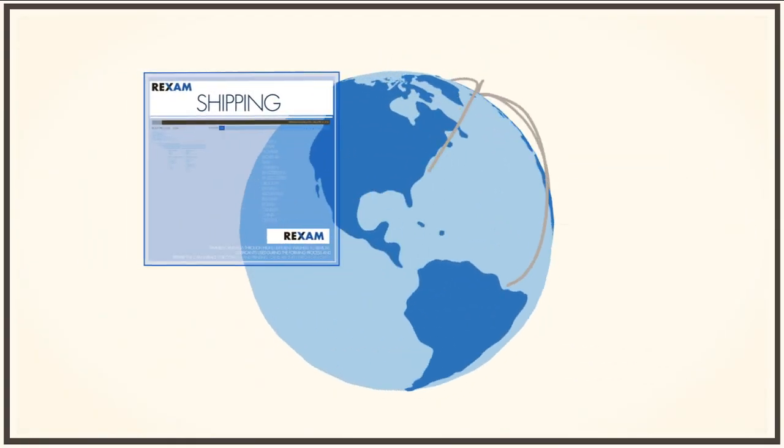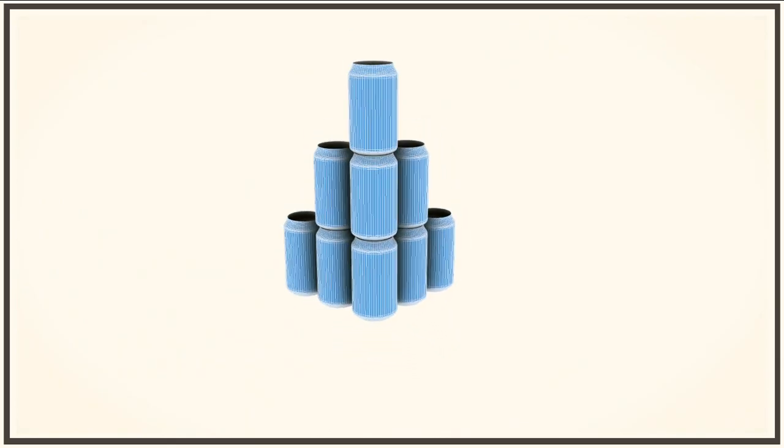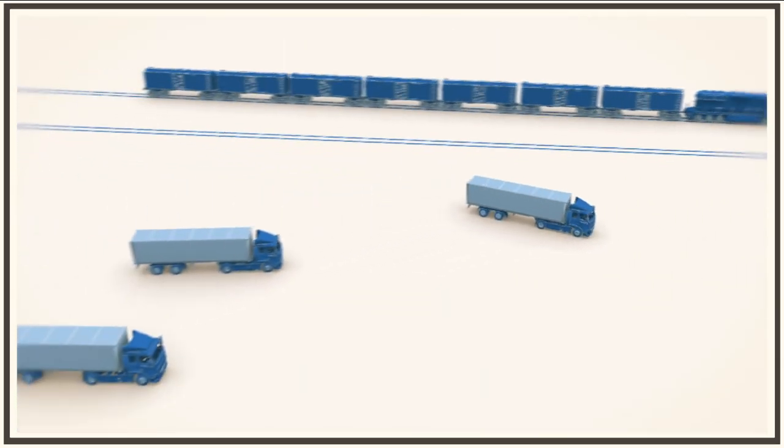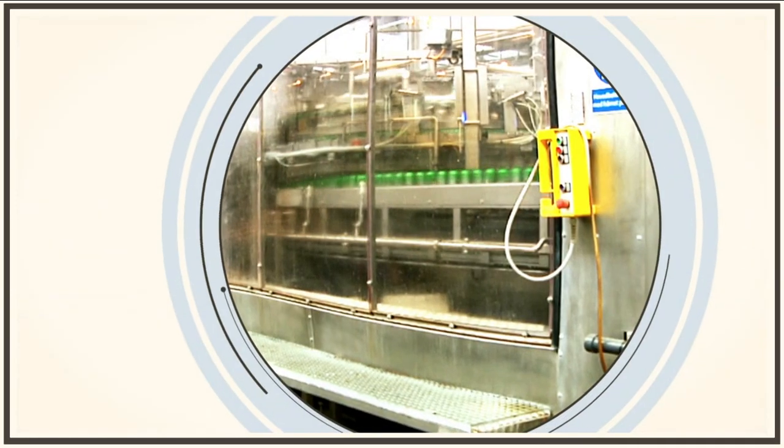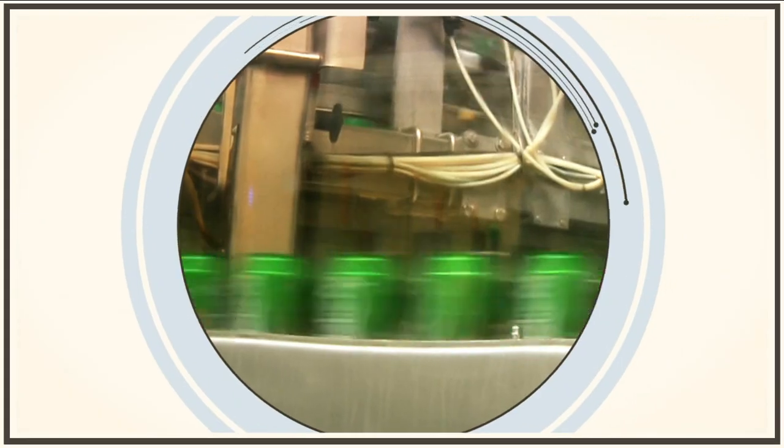First the cans are shipped to the customer for filling. Pallets of cans are stacked on top of each other and travel by lorry or train to the customer's plant. There, our can is filled and sealed with the end to complete the process.